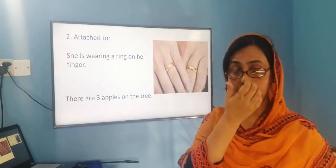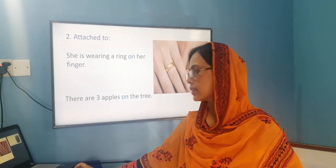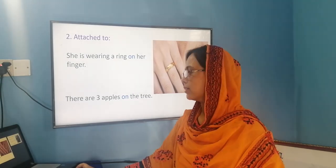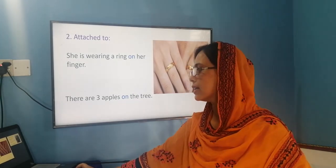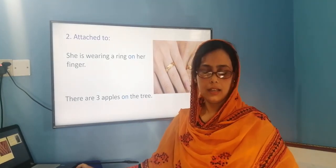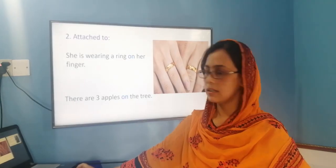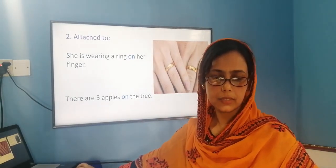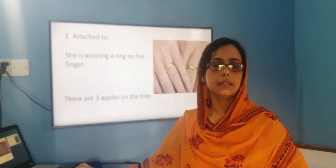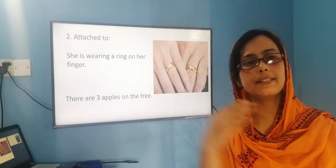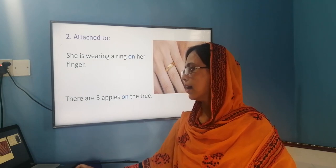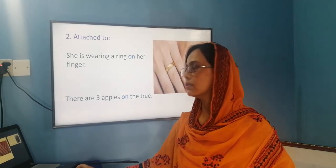The second use of 'on' is when something is attached to something else. For example, 'she is wearing a ring on her finger' — the ring is attached to the finger. Another example: 'there are three apples on the tree' — the apples are attached to the tree. In both cases the item is physically connected, so we use 'on.'